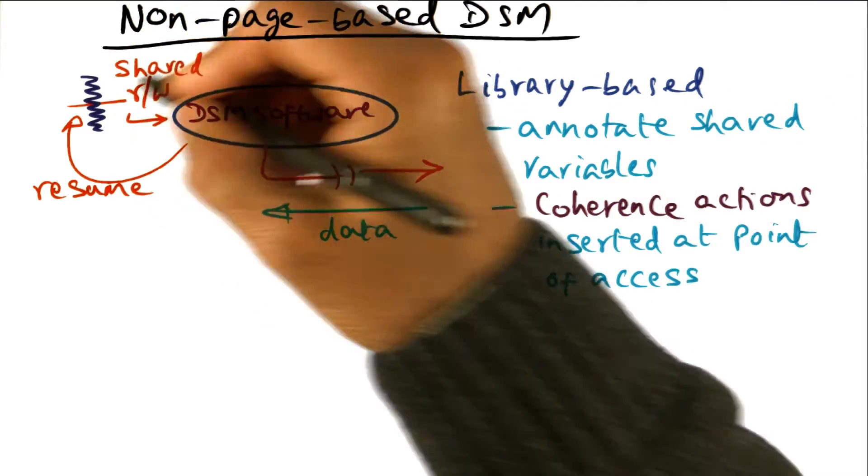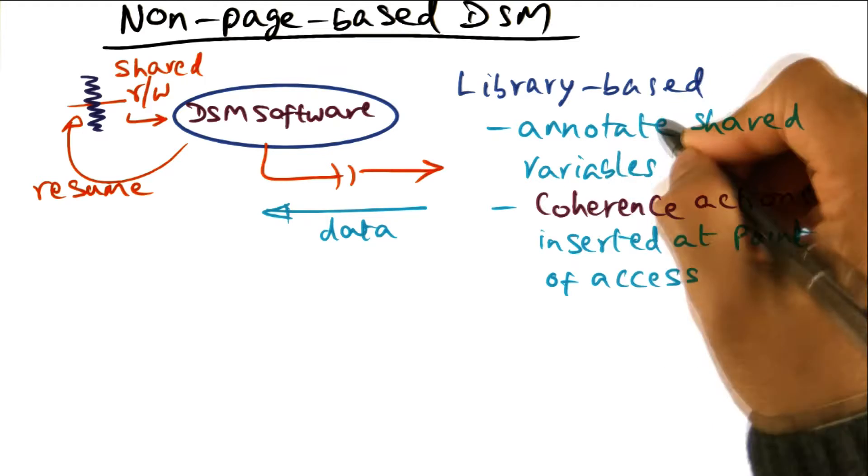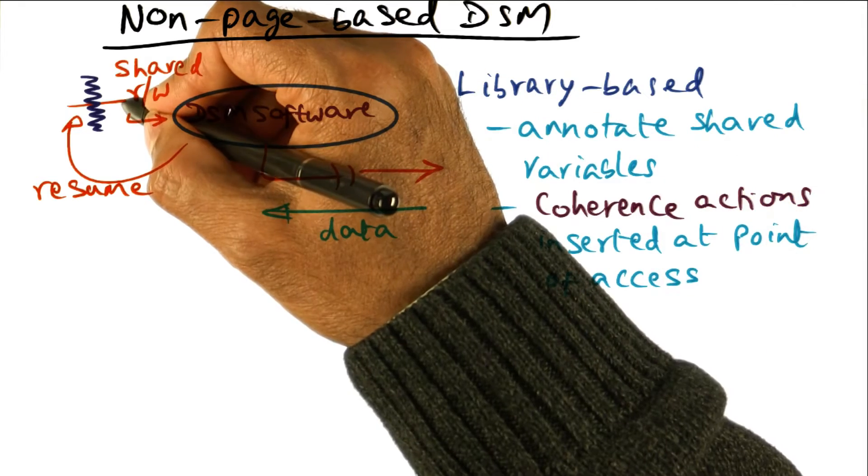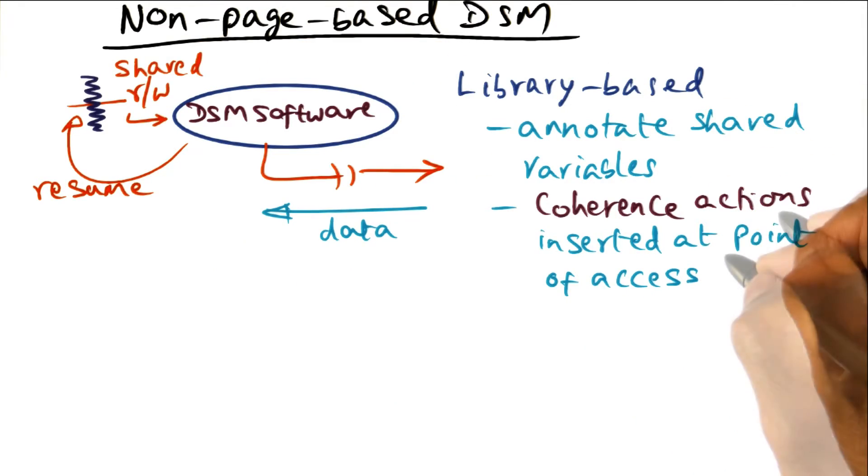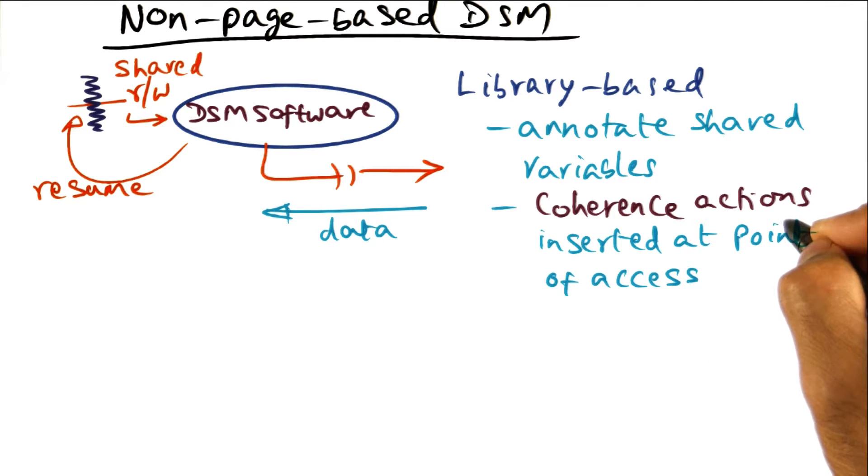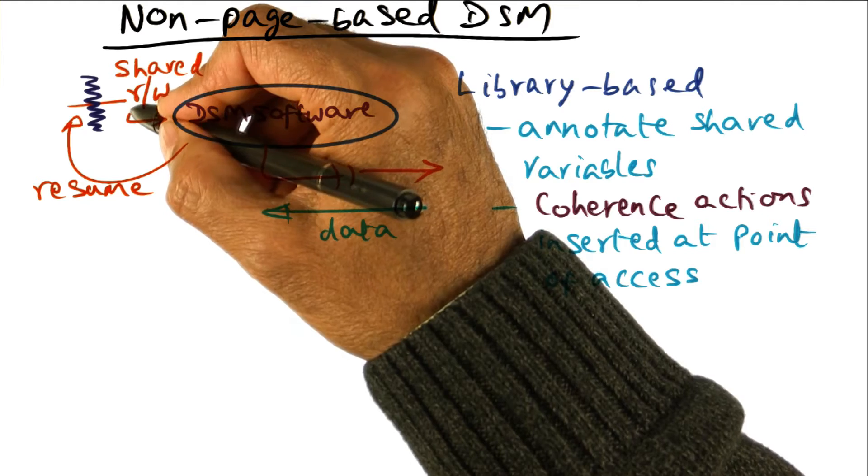Whenever you touch a shared variable, part of creating the executable is to cause a trap at the point of access to the shared variable so that the DSM software will be contacted and the DSM software can then take the coherence action at the point of access to that shared variable.